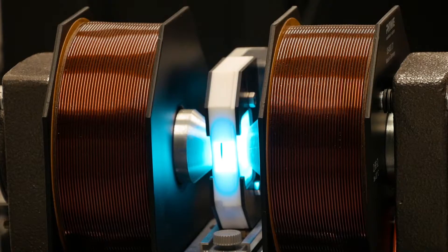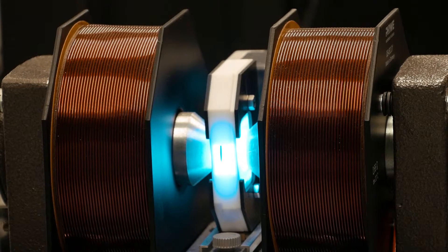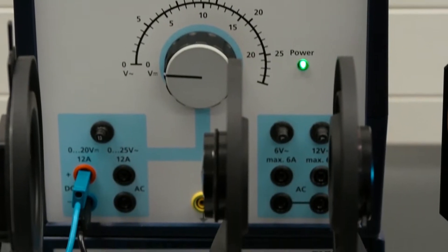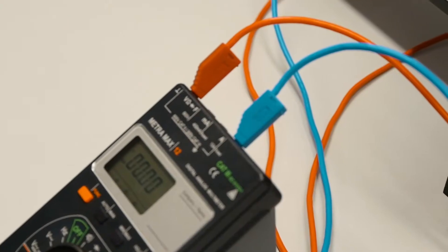Before starting the measurements, the spectral lamp should be connected to the power supply on the bottom. The coils of the electromagnet should be connected to the upper power supply and the capacitor through a current meter.